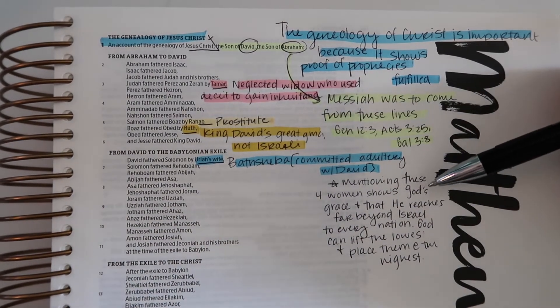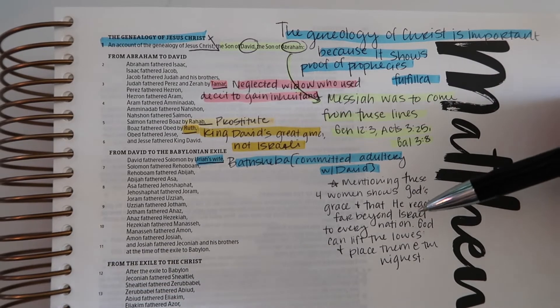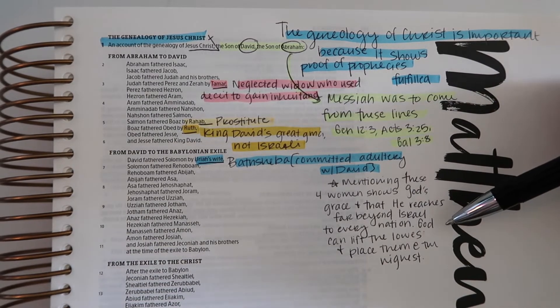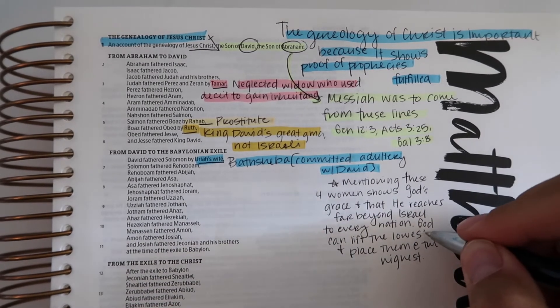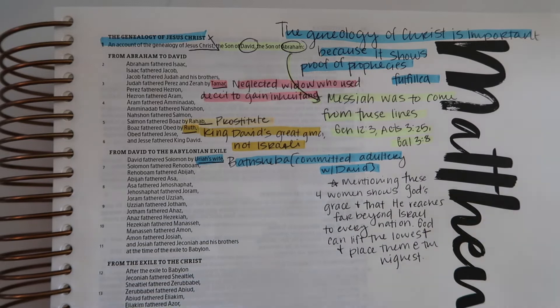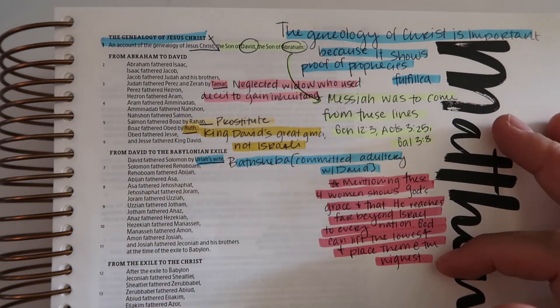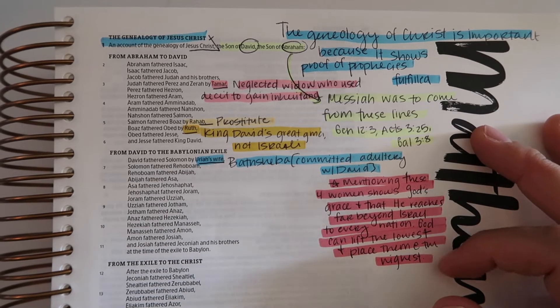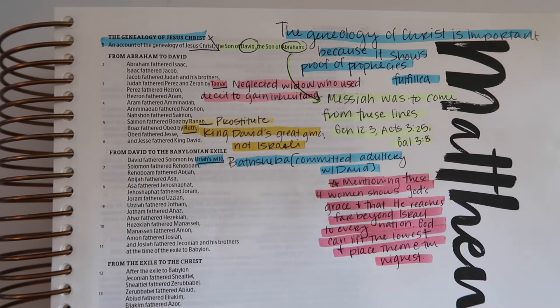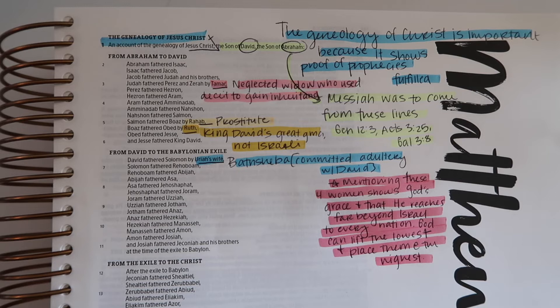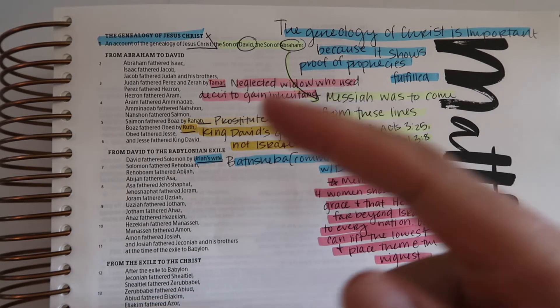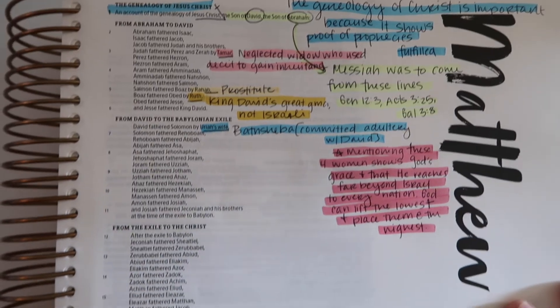I'm going to write something like that. I put: mentioning these four women shows God's grace and that he reaches far beyond to every nation. God can lift the lowest and place them at the highest. And if this isn't what you feel like God's trying to tell you, then you need to write something different. Please don't take my word for it, I want you to take God's word for it.